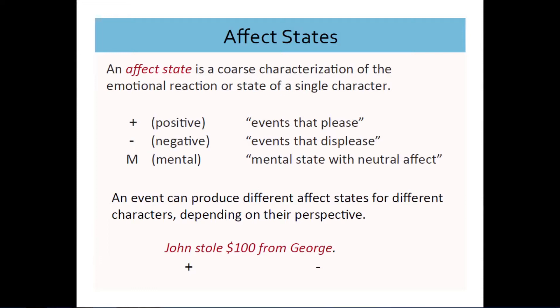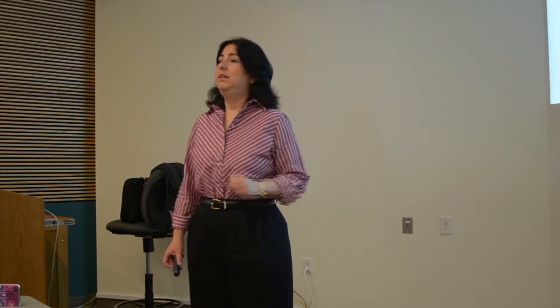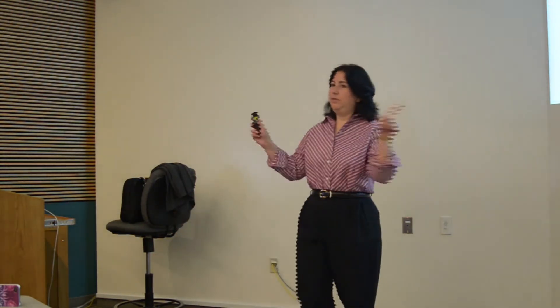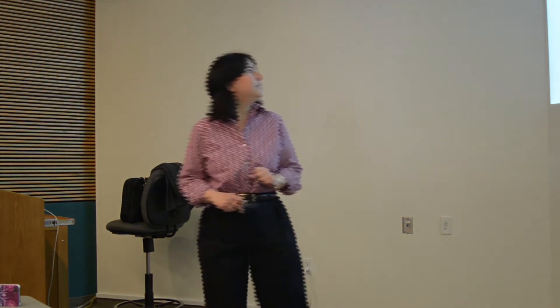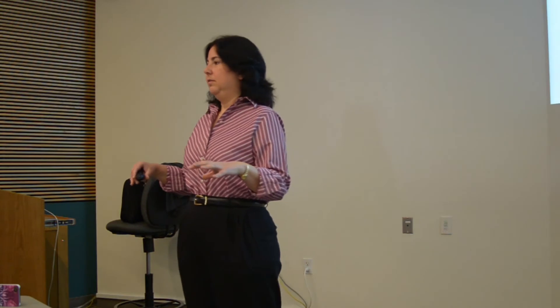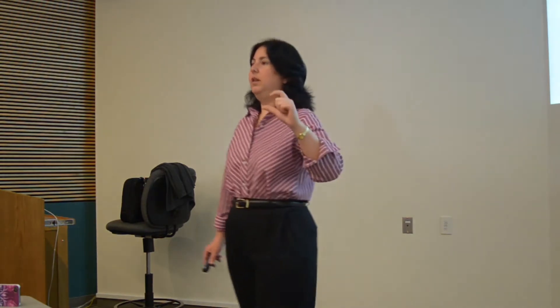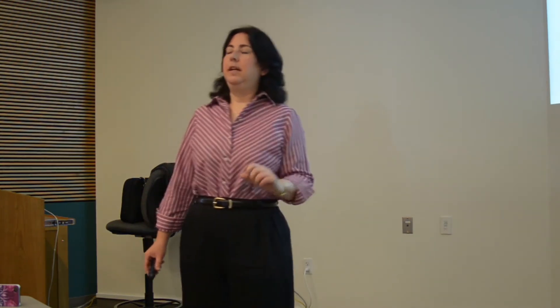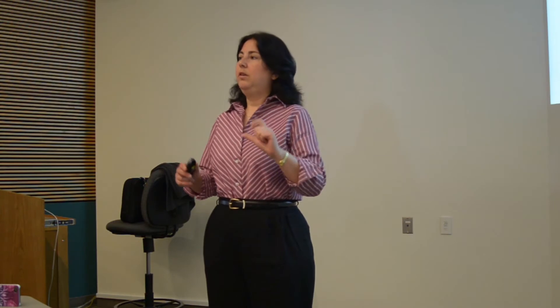For example, if John stole $100 from George, this is bad for George but good for John — John wanted to steal the money and succeeded. So the single robbery event produces different affect states for different characters. From affect states, we build up to another level of representation called primitive plot units — a pair of affect states ordered chronologically in time among the same character. A character transitions from one affect state to a different affect state, connected by a causal link.